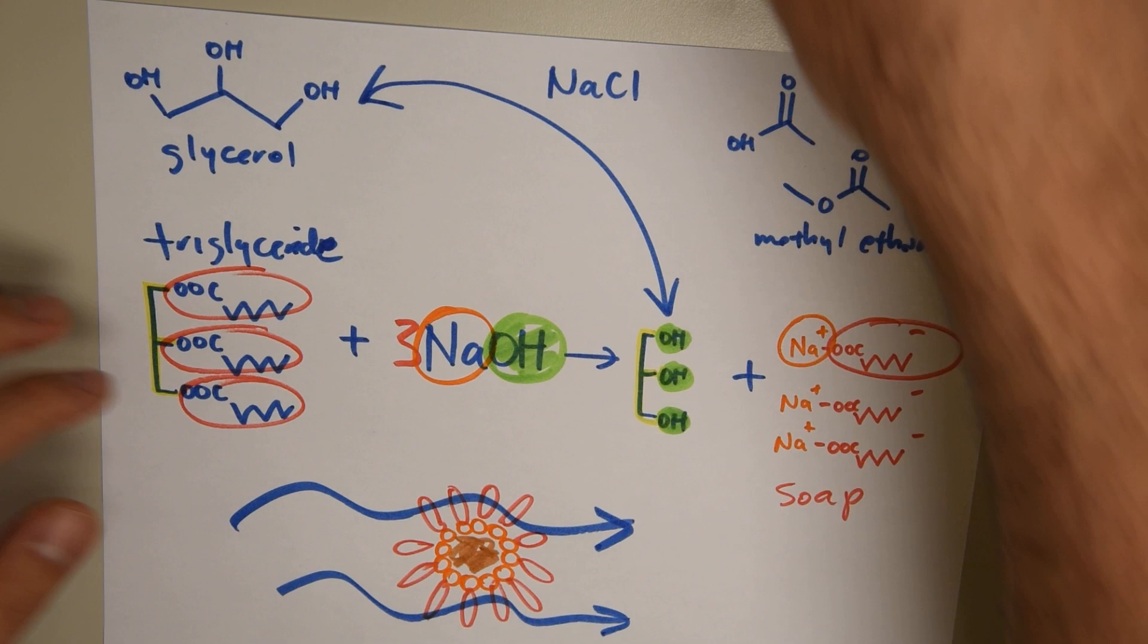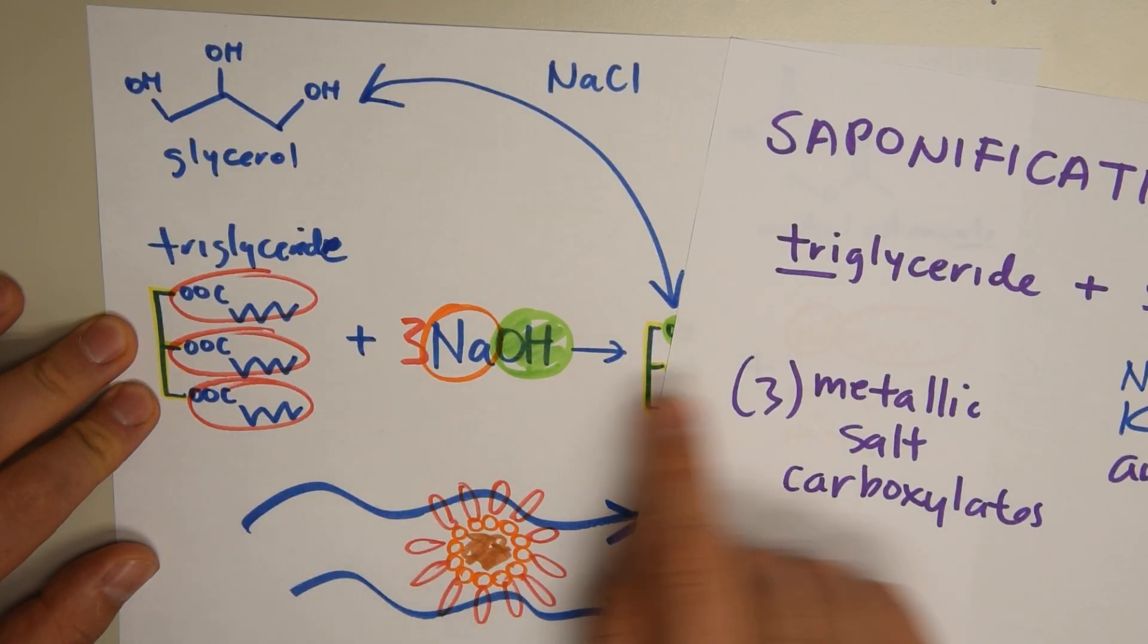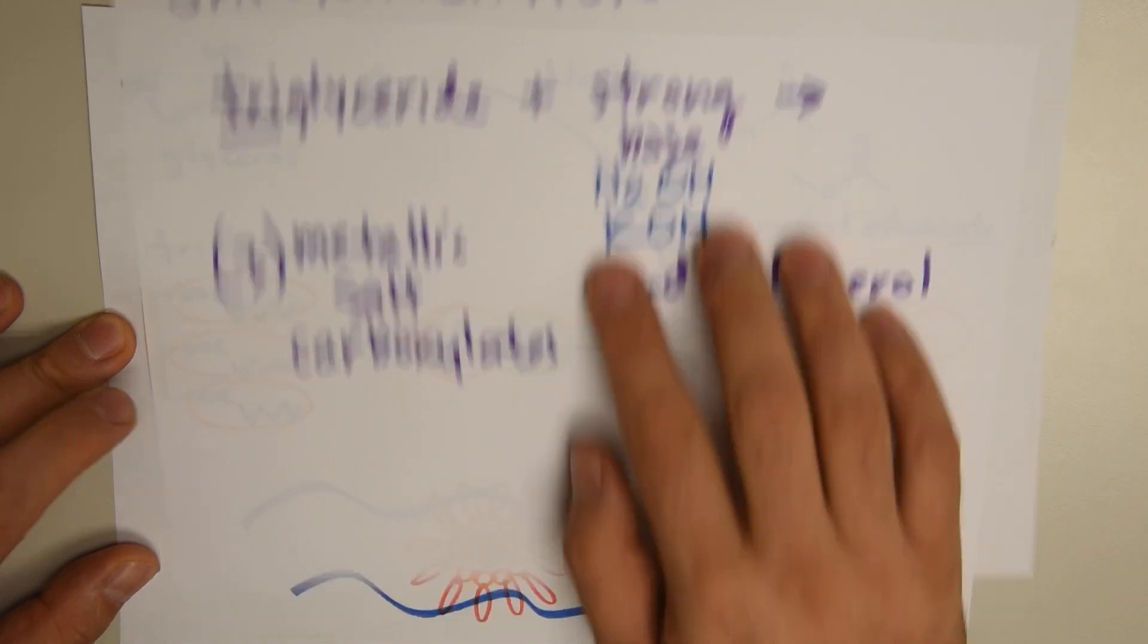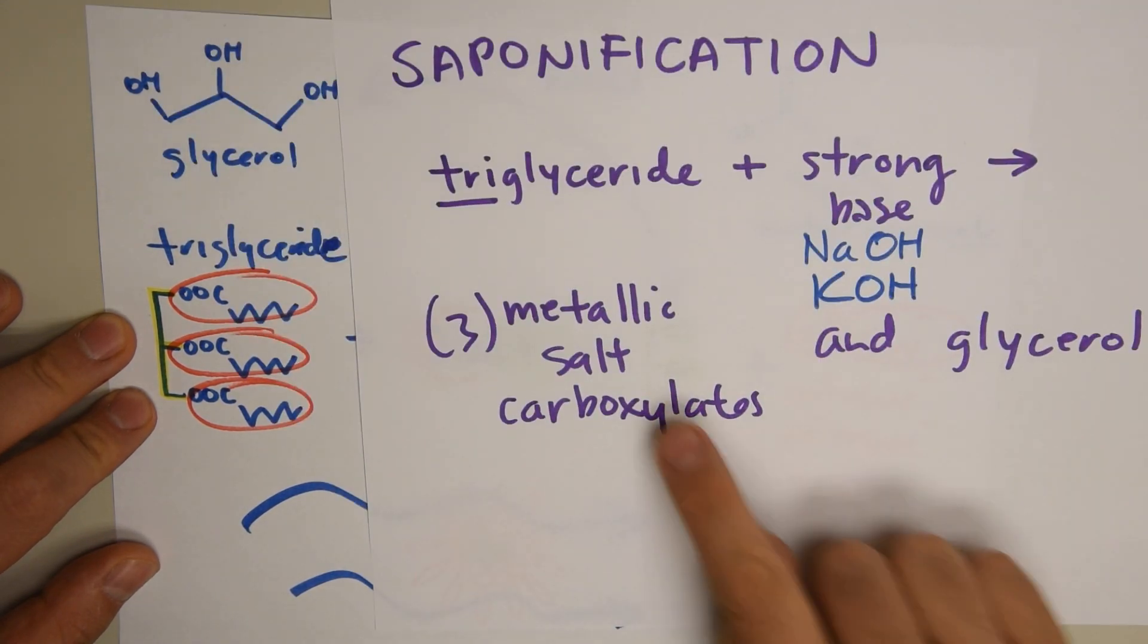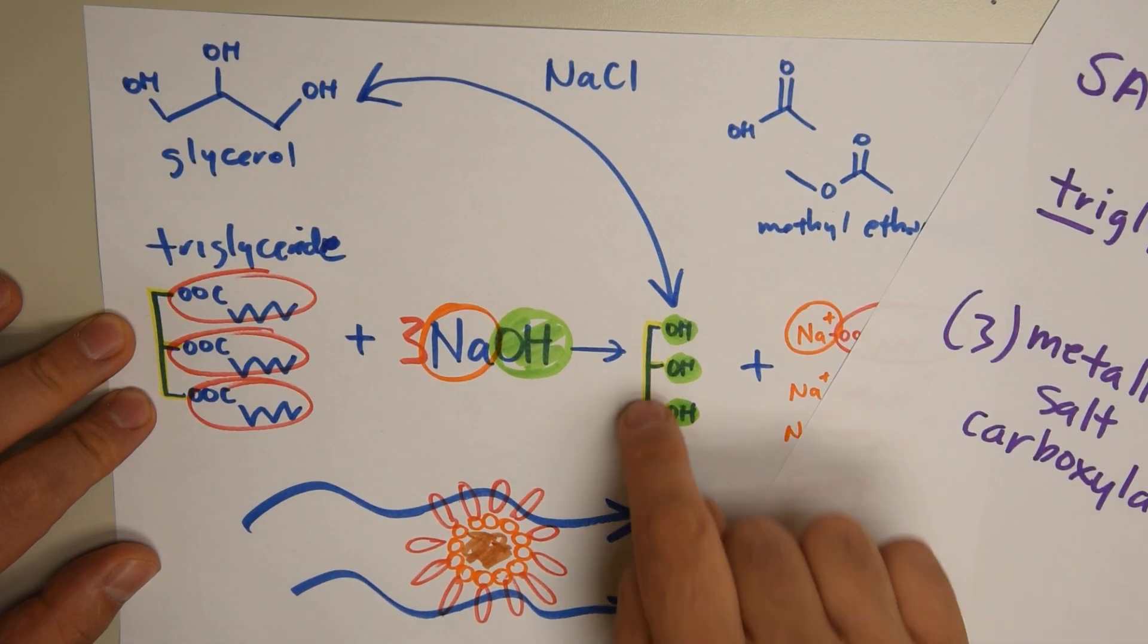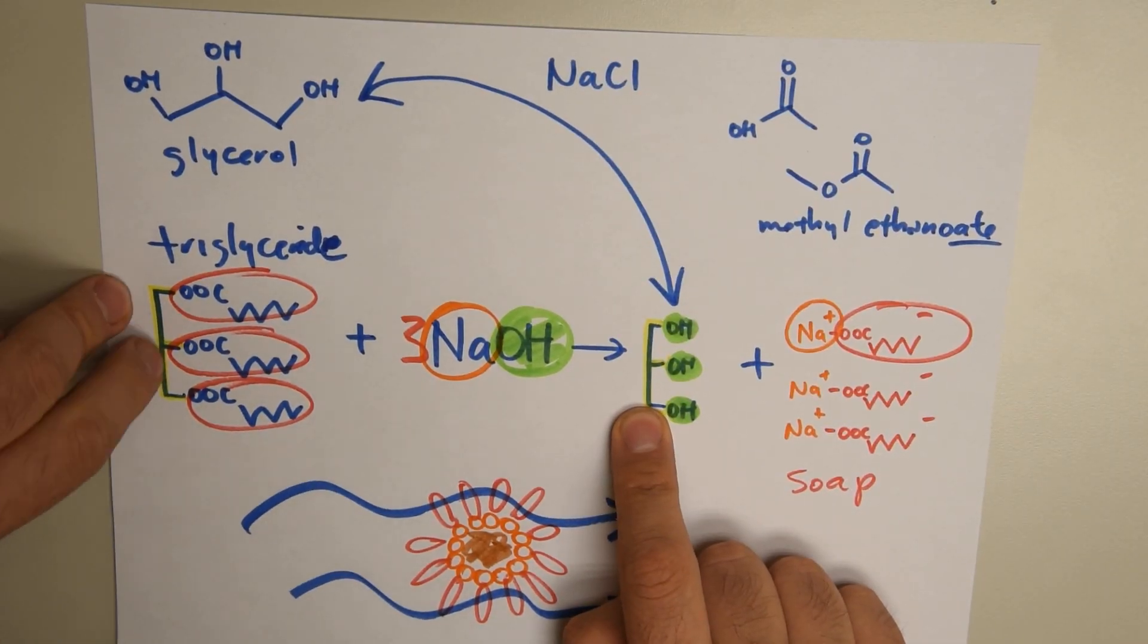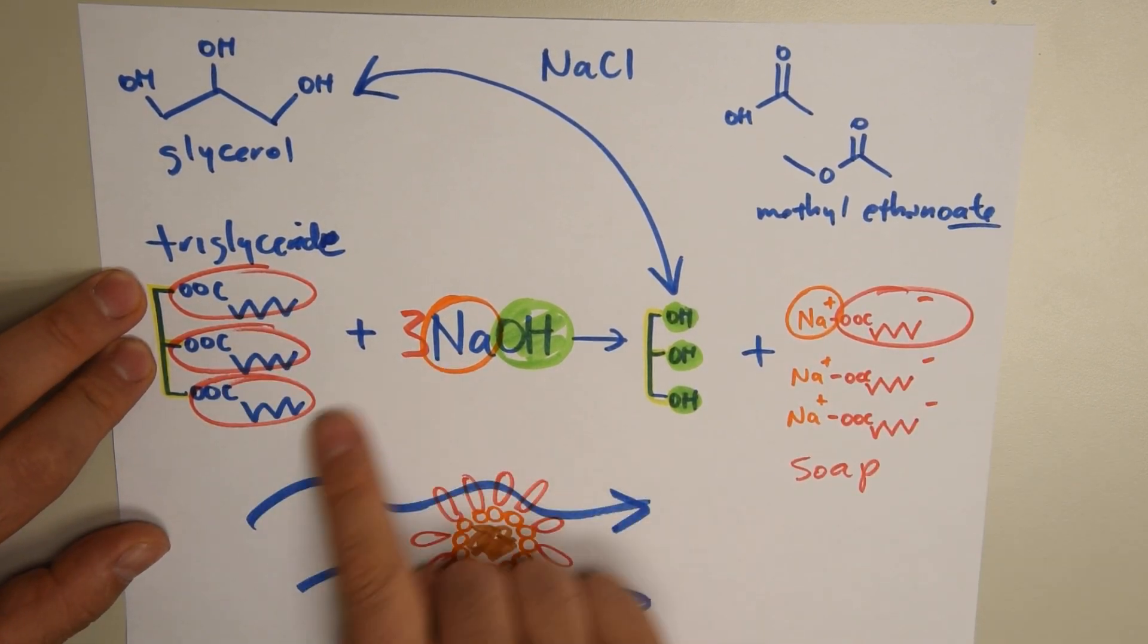So just to recap, saponification: we begin with a triglyceride, which is glycerol with the three fatty acids, plus a strong base such as sodium hydroxide or potassium hydroxide, three molecules of that, to form three metallic salts, one, two, three, and glycerol which we have here. And as a recap, the backbone comes from the triglyceride, the OHs come from the base, three metals with the leftover, and it's all color coded.